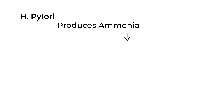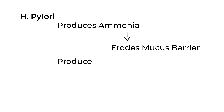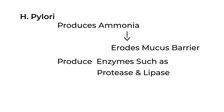H. pylori is a bacteria that produces ammonia, and this ammonia is important because it can erode the mucous barrier that exists in the stomach. In addition to ammonia, H. pylori can also produce certain enzymes such as protease and lipase, which are responsible for causing mucosal damage.